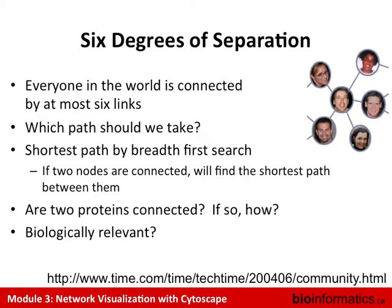This is an example of how you can use algorithms in computer science to answer a question about a network. It turns out there are many algorithms in the field of graph theory. In computer science, people call networks 'graphs' — we don't use that term because most people think of a graph as a plot. In graph theory, there's a rich library of algorithms that answer all sorts of questions like this.